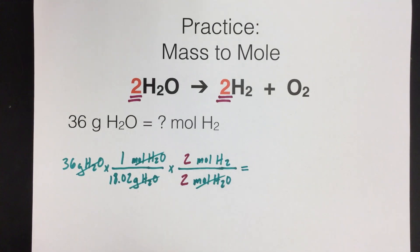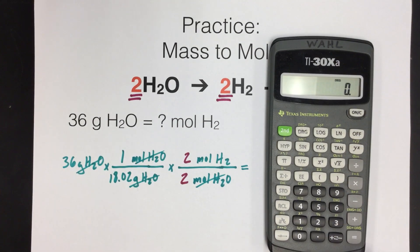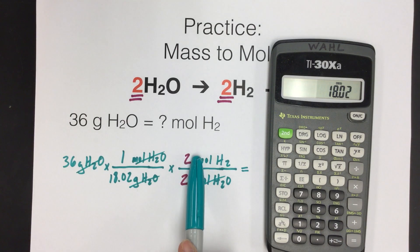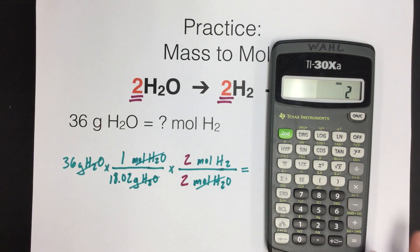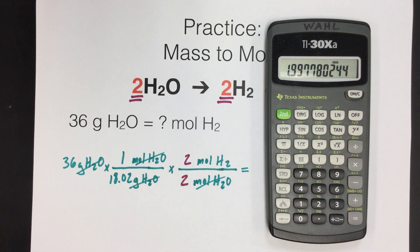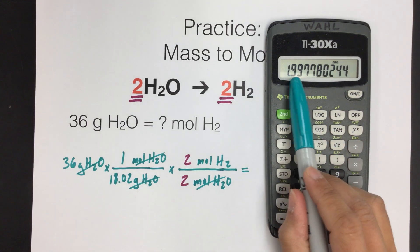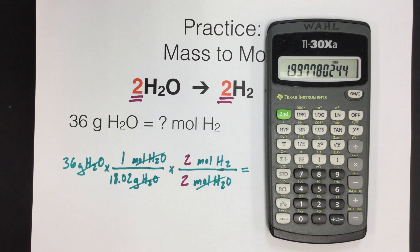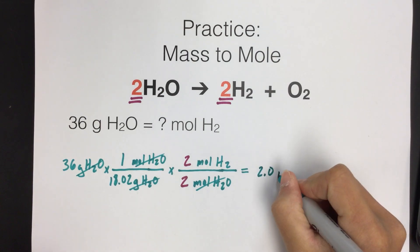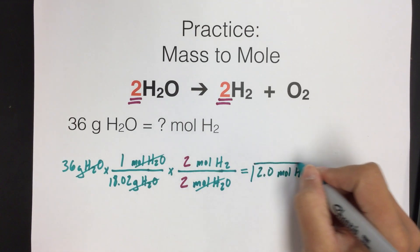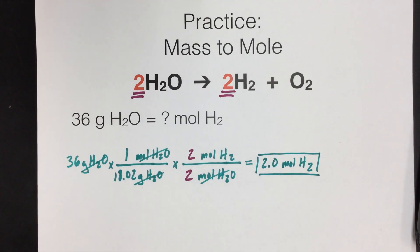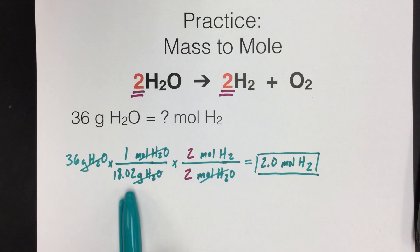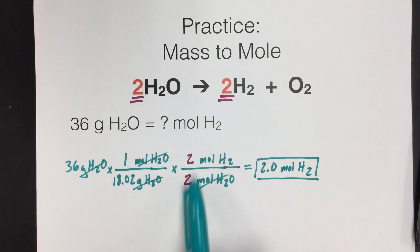Now we calculate: numbers on top we multiply, numbers on the bottom we divide. Starting with 36, divided by 18.02, then times 2 divided by 2 — those cancel but we'll type it. We are only allowed two sig figs. The result is 1.9-something, but it's followed by a 9, so we round up to 2.0. Our final answer is 2.0 moles of H2. To review: the molar mass number came from the periodic table, and the mole ratio came from the balanced chemical equation.